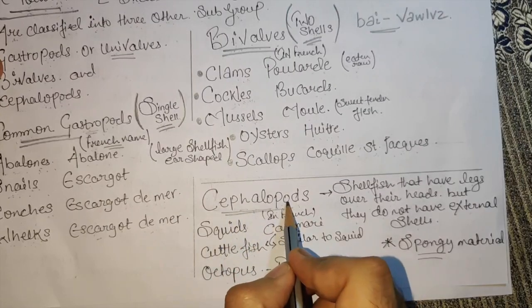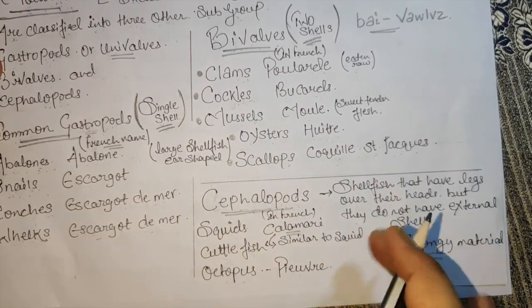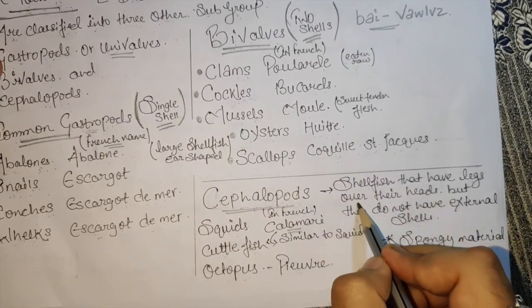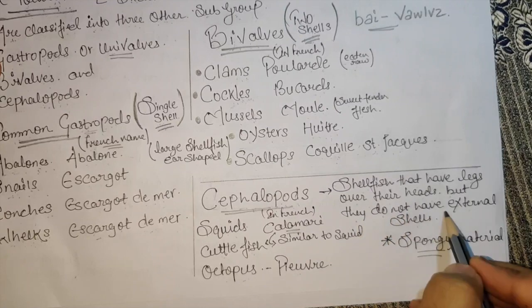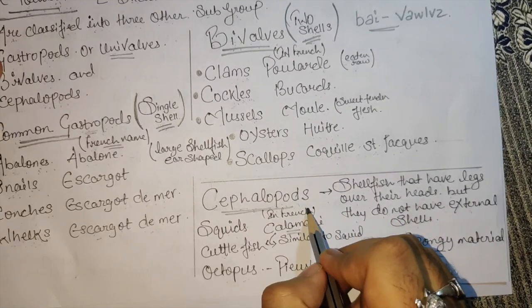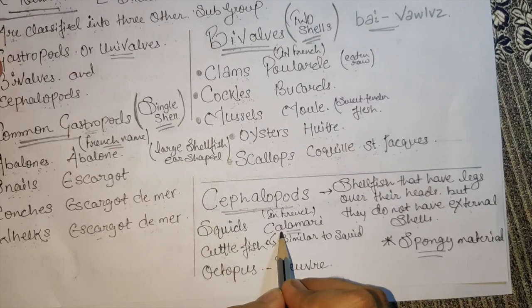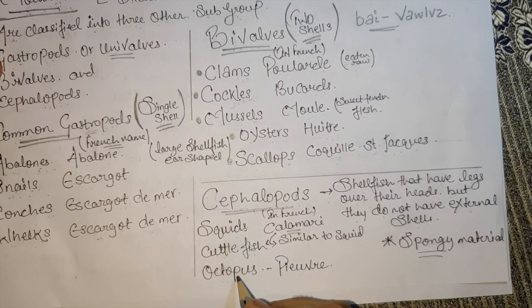Cephalopods have no shell. These are shellfish that have legs over their heads but do not have an external shell. Examples include squid — you know squid is called calamari — as well as cuttlefish and octopus. Squid and octopus do not have a shell.